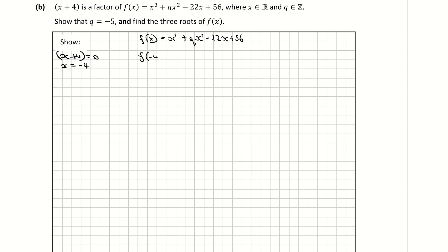In order to show that q is equal to negative 5, I'm going to sub that root into f of x. So f of x is equal to x cubed plus qx squared minus 22x plus 56. To solve for q, I sub in my first root, minus 4. So f of minus 4 — use brackets here for your calculator because we're using a negative 4. So that's negative 4 cubed plus q times negative 4 squared minus 22 times negative 4 plus 56. This is equal to 0 because when you sub in a root into the cubic equation, it should satisfy it because it's a factor.